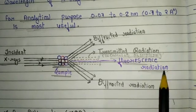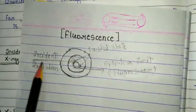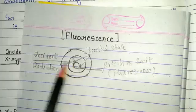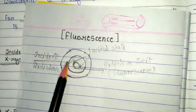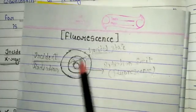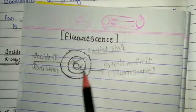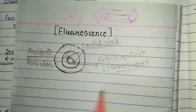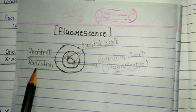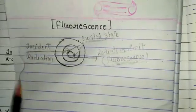The third type is fluorescence radiation. To understand fluorescence, we discuss it diagrammatically. When incident radiation strikes an atom of the sample, it strikes an electron, causing the electron to move to an excited state and jump from the inner shell to the outer shell. After some time, this excited electron comes back down to the inner shell and emits some radiation, which is called fluorescence. The wavelength of this fluorescence is longer than that of the incident radiation.